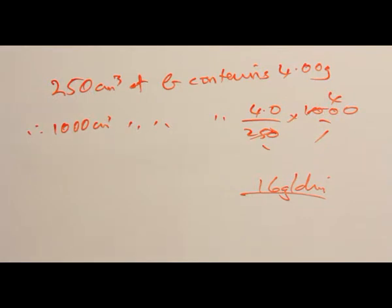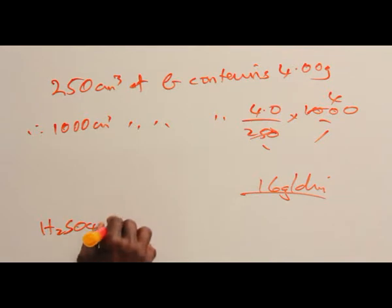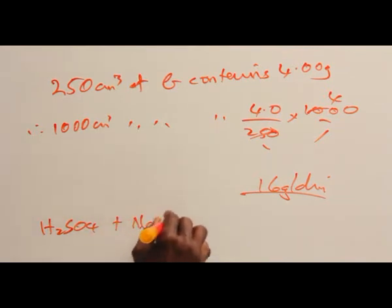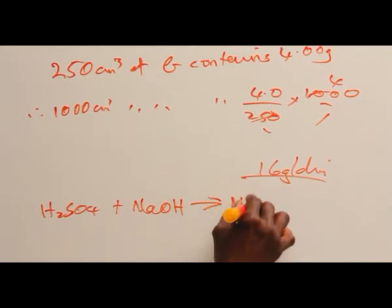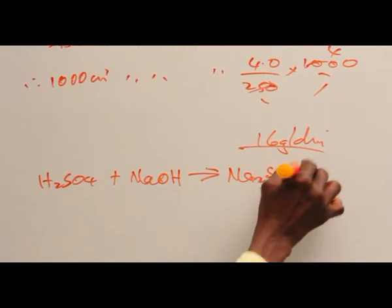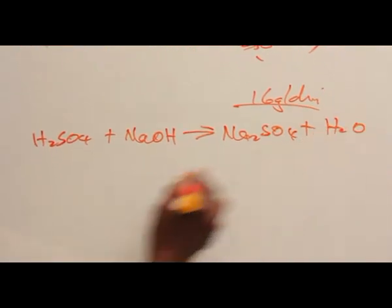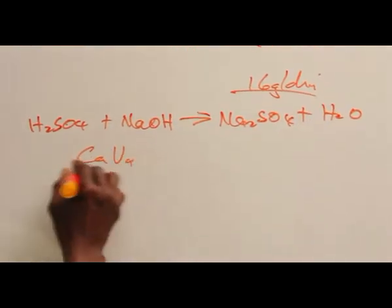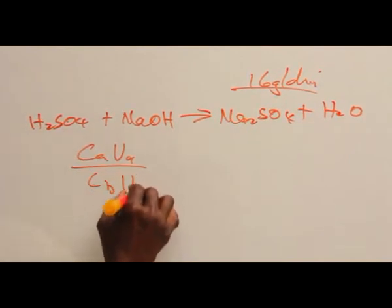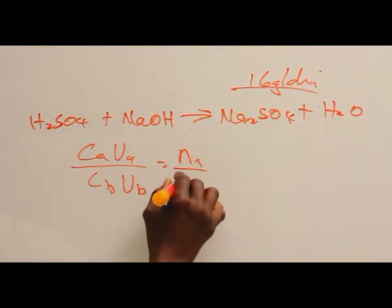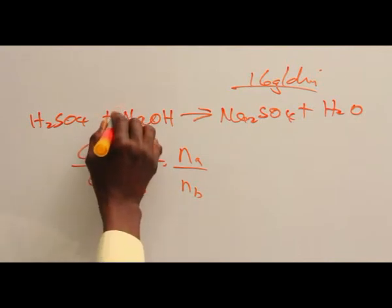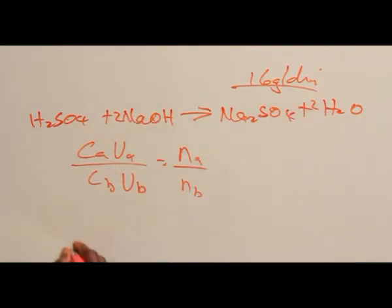Now, from the balanced equation, we have CAVA over CBVB equals NA over NB. Let's ensure the equation is balanced.